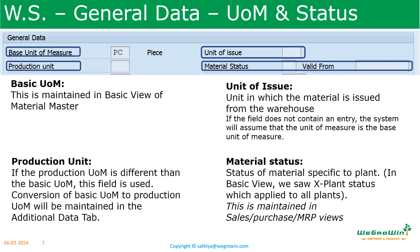Then we have the PS material status, which is the plant-specific material status — the status of the material in the plant. We saw the cross-plant status in the basic view, which is applied to all plants in the client. This plant-specific material status is maintained for the specific material. It is maintained in the sales view, purchase view, MRP views, and here in the work scheduling view also. A valid from date can also be given.